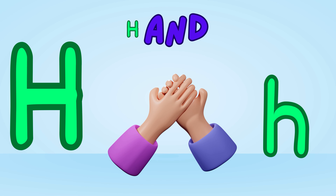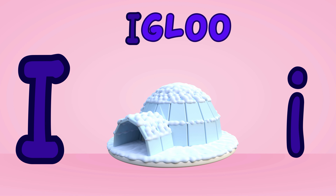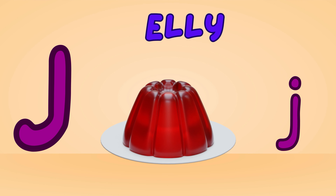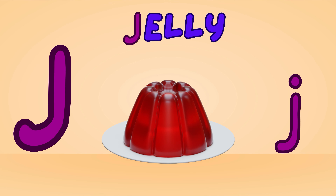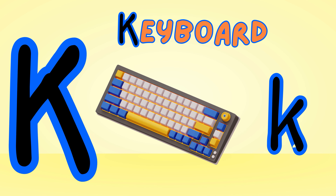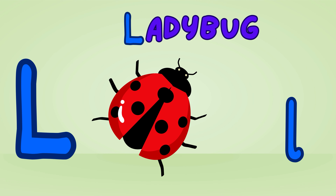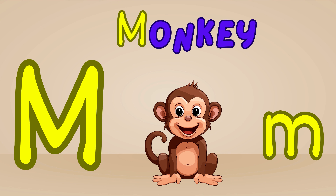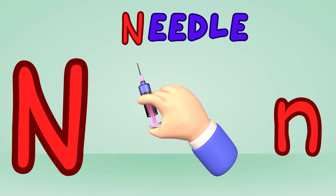H is for hand, hand, hand. This is the hand, hand, hand. I is for igloo, igloo, igloo. This is an igloo, igloo, igloo. J is for jolly, jolly, jolly. This is the jolly, jolly, jolly. K is for keyboard, keyboard, keyboard. This is the keyboard, keyboard, keyboard. L is for ladybug, ladybug, ladybug. This is the ladybug, ladybug, ladybug. M is for monkey, monkey, monkey. This is a monkey, monkey, monkey. N is for needle, needle, needle. This is the needle, needle, needle.